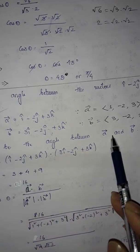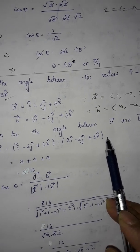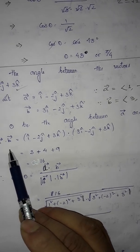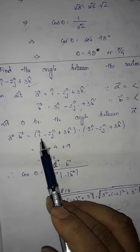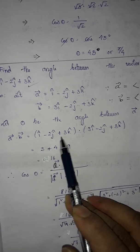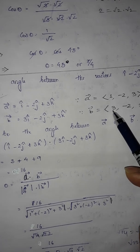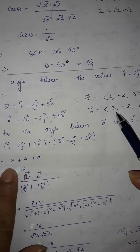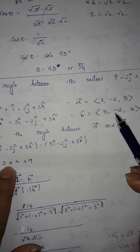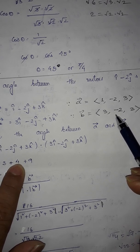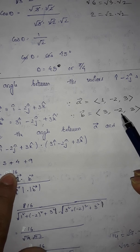Let theta be the angle between the vectors a and b. Find a·b first — the dot product. So their dot product will be 1×3 plus (−2)×(−2) plus 3×3, which gives 3 + 4 + 9. So a·b = 16.